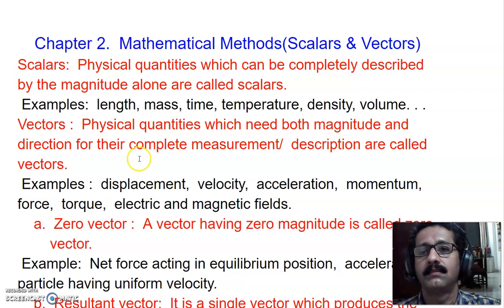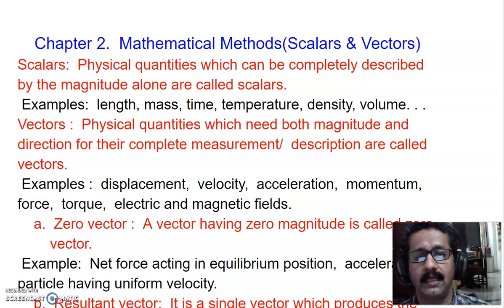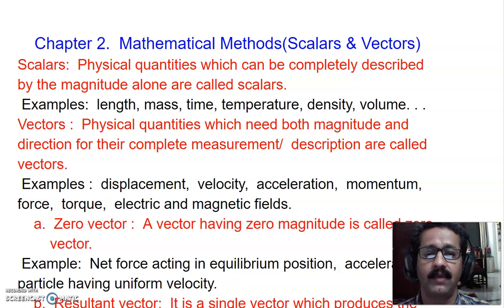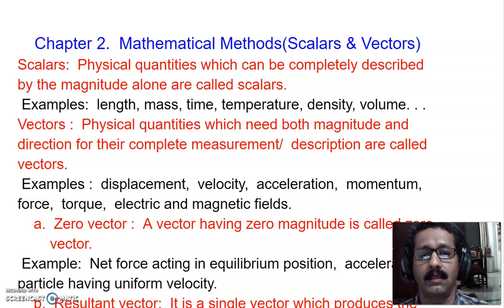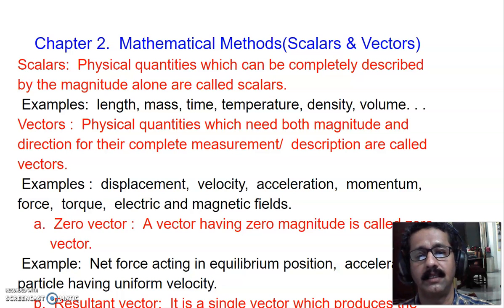Velocity is another vector physical quantity. Velocity and speed are equal in magnitude only when the particle is moving in a rectilinear direction, i.e., in a straight line — only then velocity equals speed. Otherwise, velocity can differ at different points because velocity takes into consideration both the magnitude and the direction.